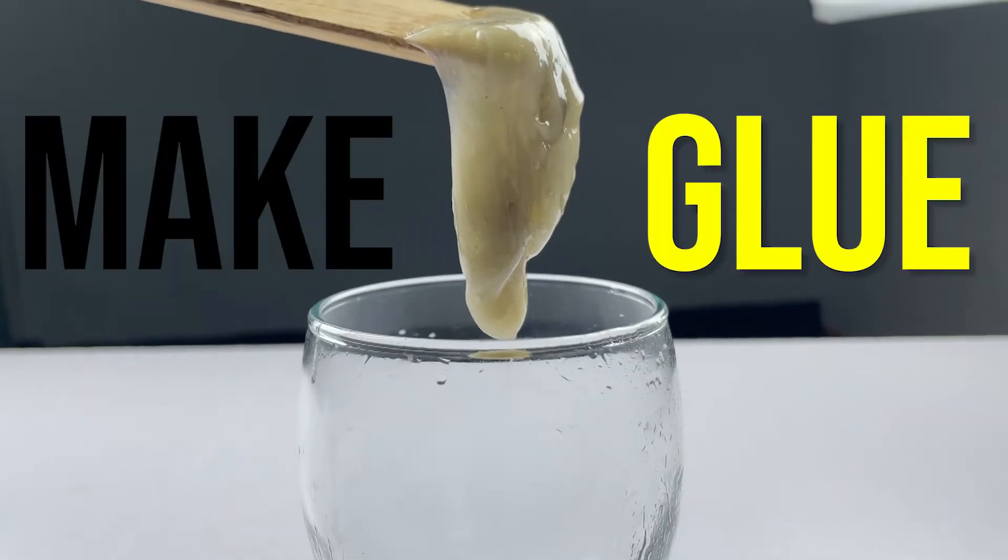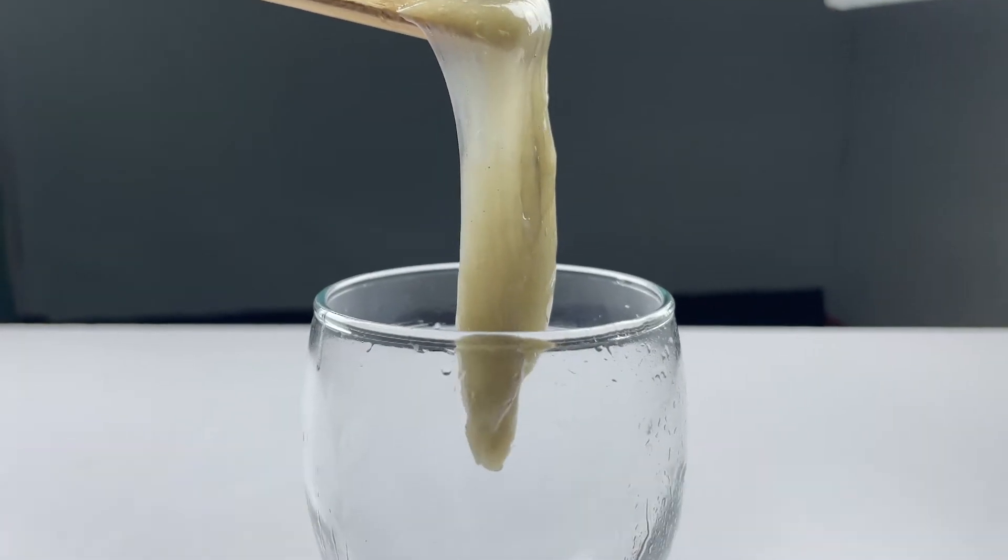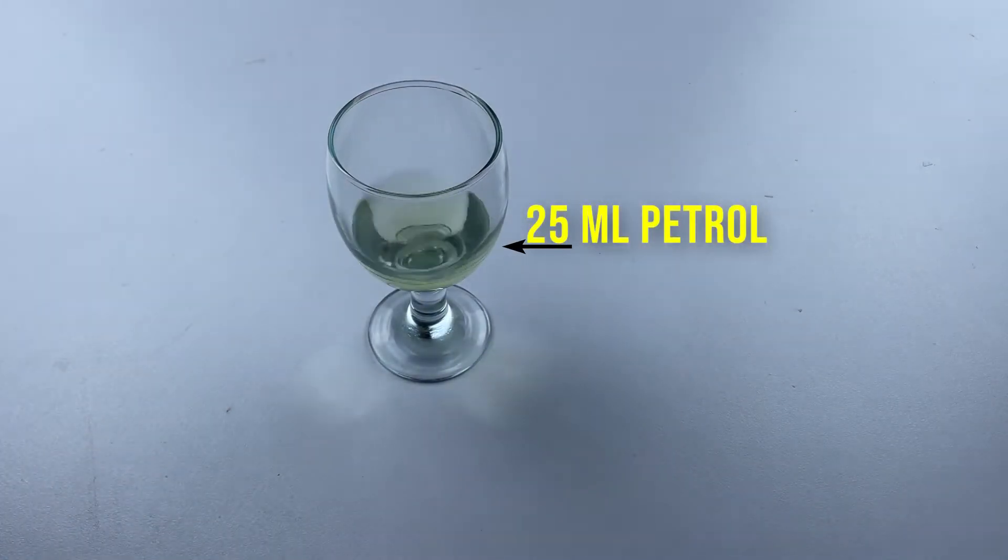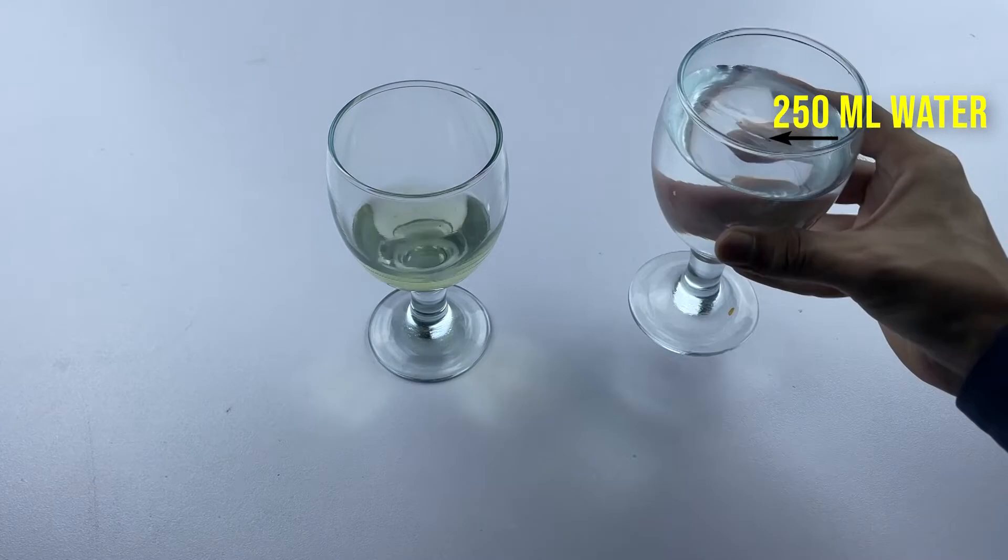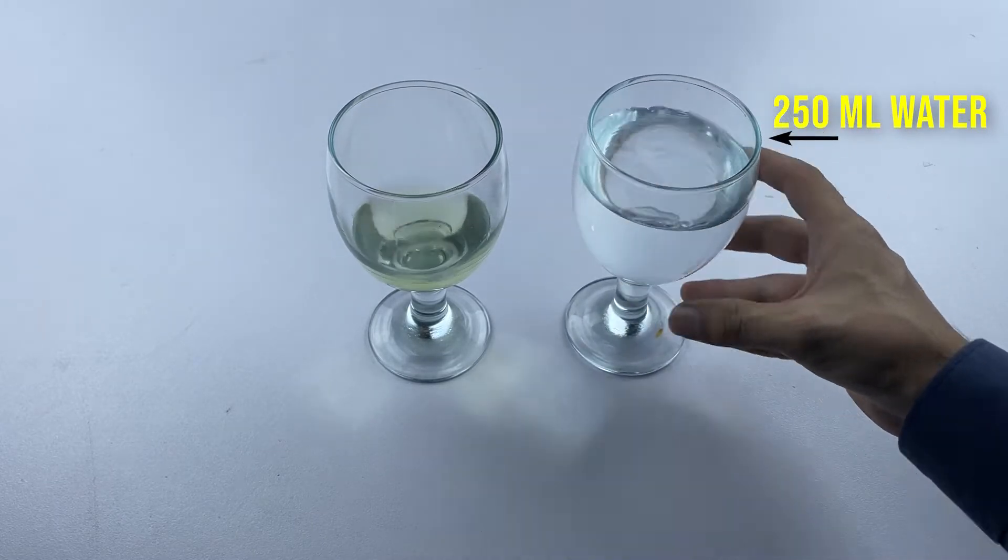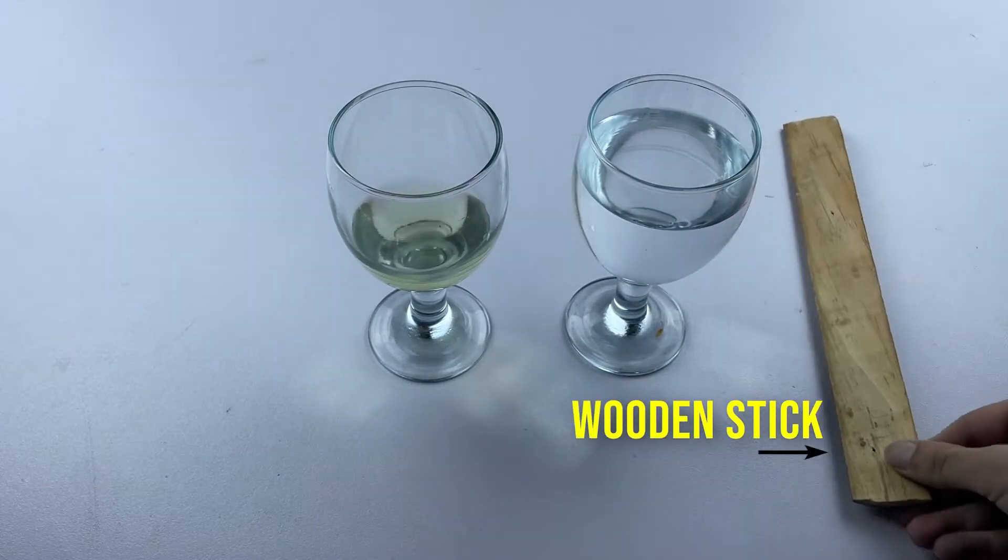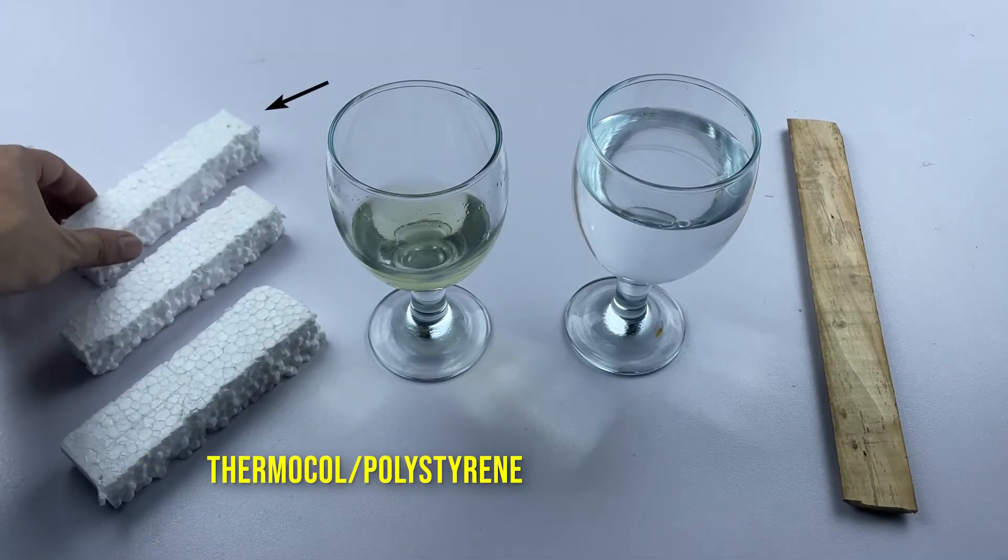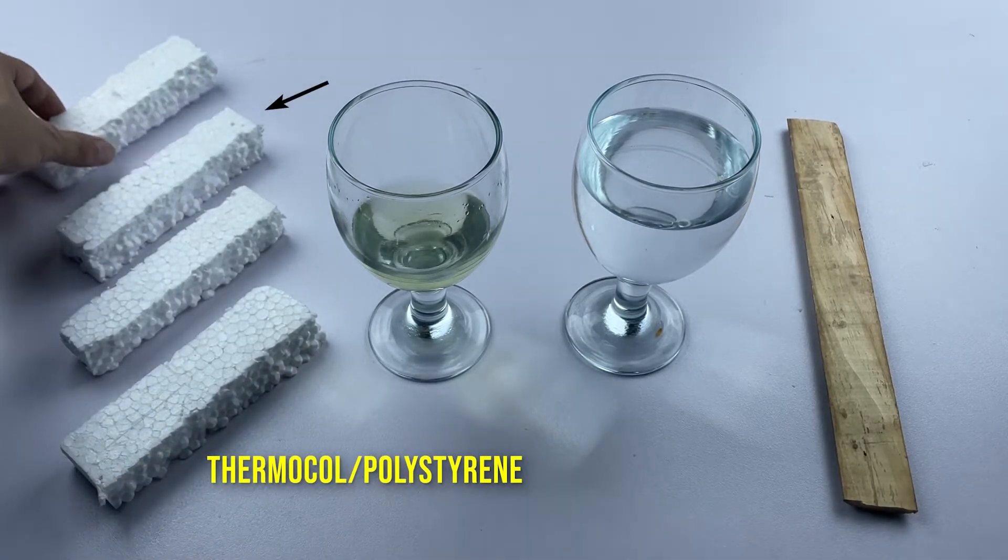Today's experiment is to make glue using simple materials easily available at home. For this experiment you need 25 ml petrol also called gasoline, 250 ml water for solubility test, a wooden stick for mixing, and most importantly four or more pieces of thermocol sheet chemically named polystyrene.